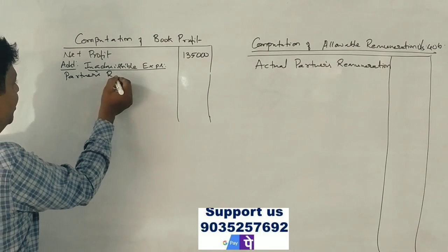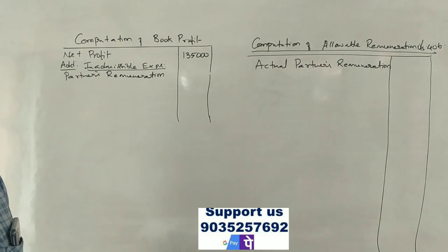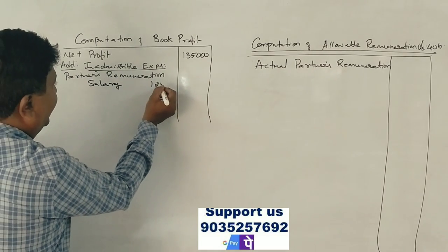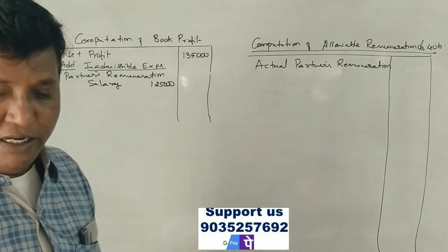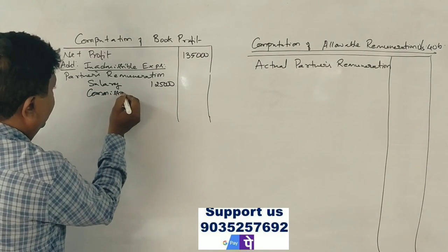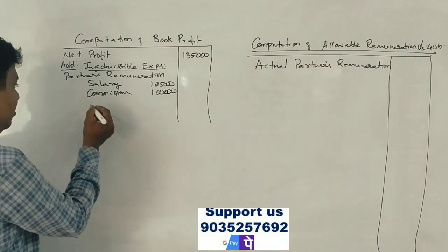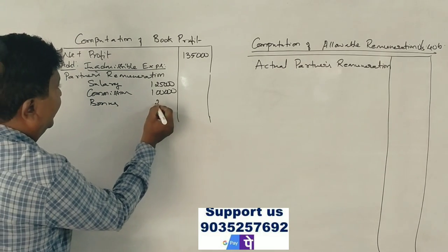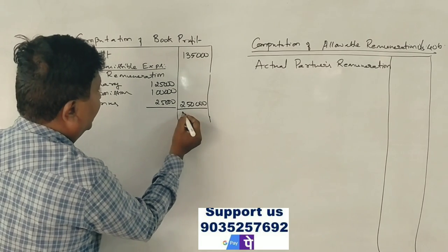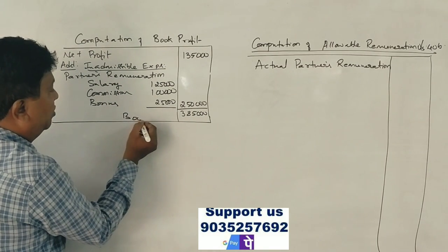Now we add back inadmissible partner remuneration items: salary to partners ₹1,25,000, commission to partners ₹1,00,000, and bonus to partners ₹25,000. Total add-back is ₹2,50,000, giving a book profit of ₹3,85,000.